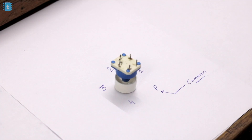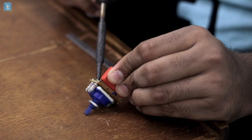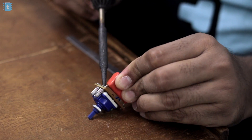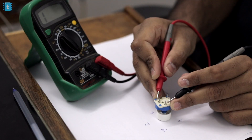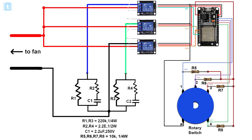Assuming that everyone watching this video already knows how a fan regulator works and how to make our own fan regulator using the ESP32 board, let's first start with getting the live feedback from the regulator switch. Here I'll be using this four-speed control fan switch which I desoldered from the regulator circuit, and after that I'll connect all of its terminals with the ESP32 board. Here is the complete circuit diagram of all the components connected with the ESP32 board.